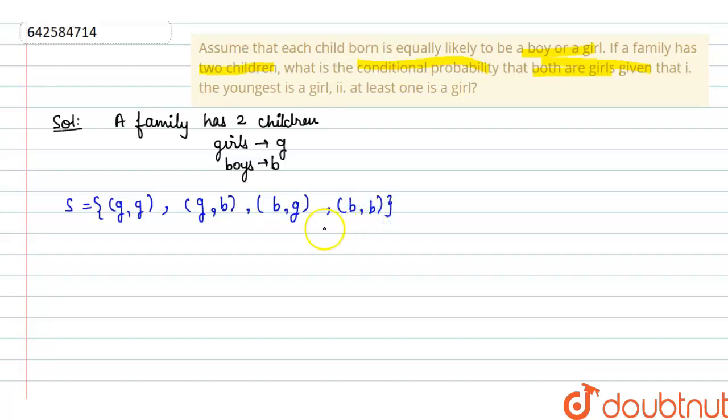According to the question, we need to find the probability that both the children are girls, given that the youngest is a girl.